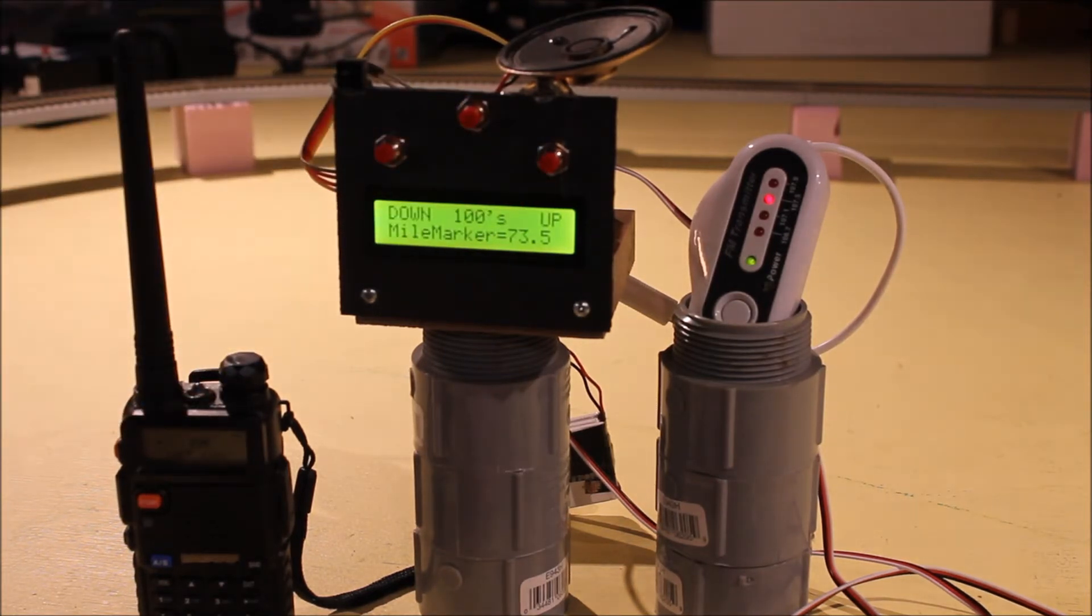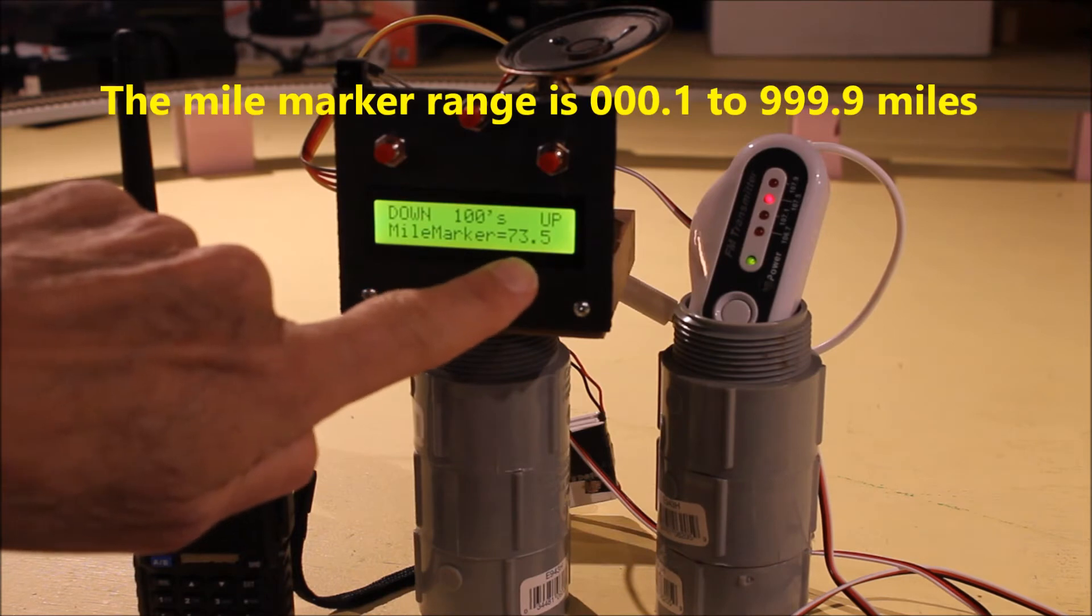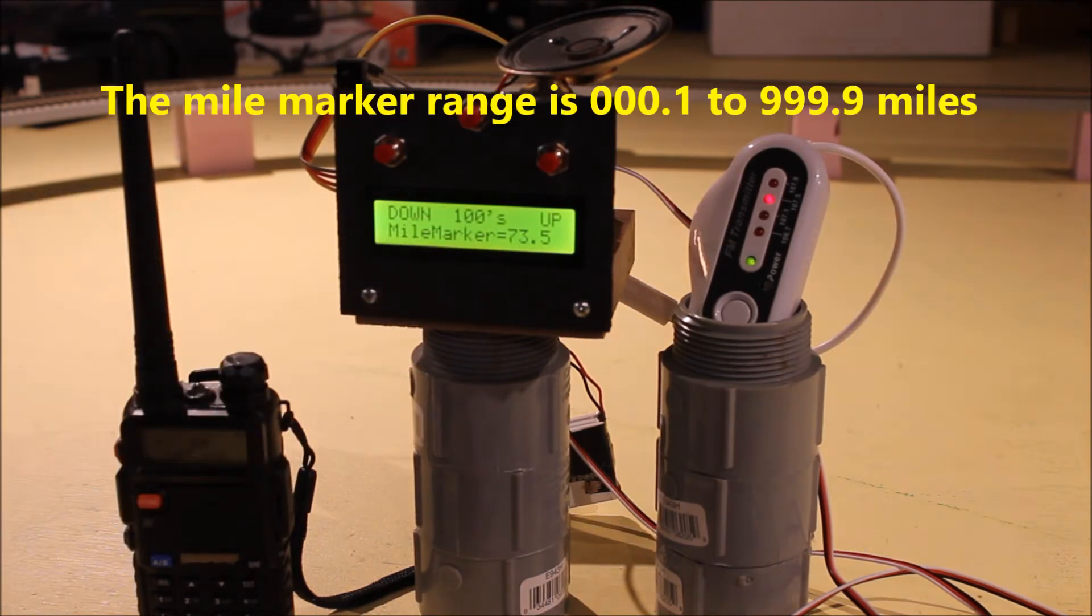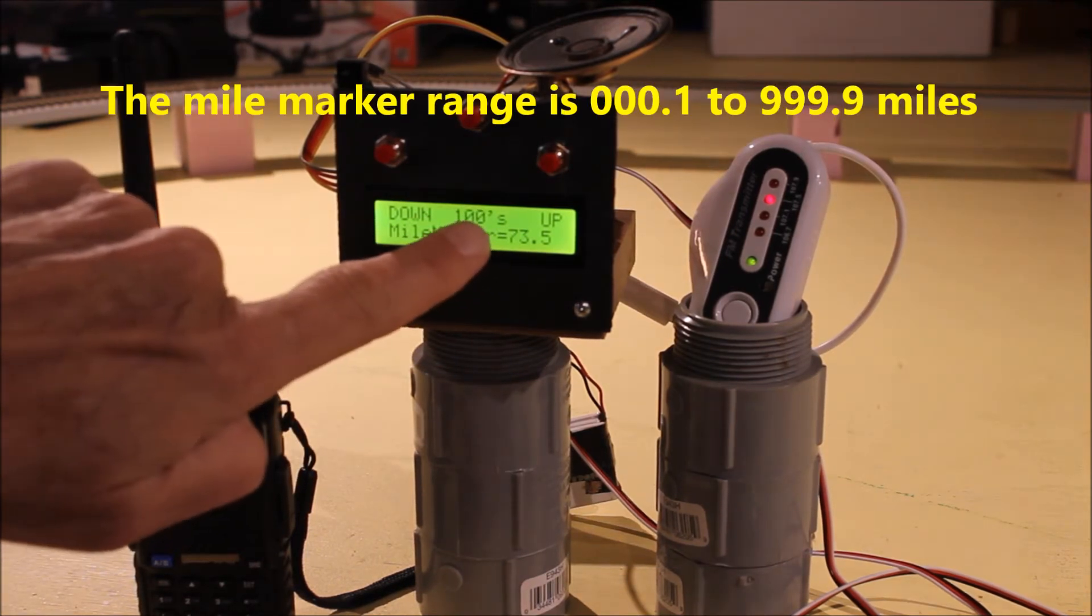Right now you can see the mile marker is set to 73.5 miles and it's asking me to change the hundreds place.